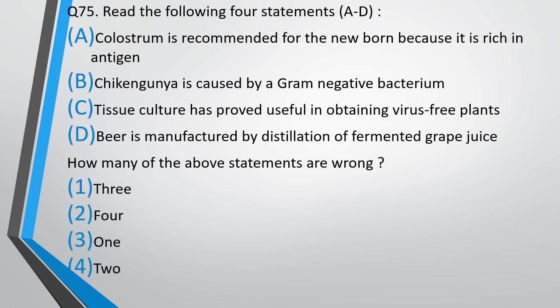Question number 75. Read the following 4 statements: (1) Colostrum is recommended for newborns because it is rich in antigen. (2) Chikungunya is caused by gram-negative bacteria. (3) Tissue culture has proved useful in obtaining virus-free plants. (4) Beer is manufactured by distillation of fermented grape juice. How many of the above statements are incorrect? The answer is option 1 — 3 of the above statements are wrong. Only statement 3, tissue culture has proved useful in obtaining virus-free plants, is correct.